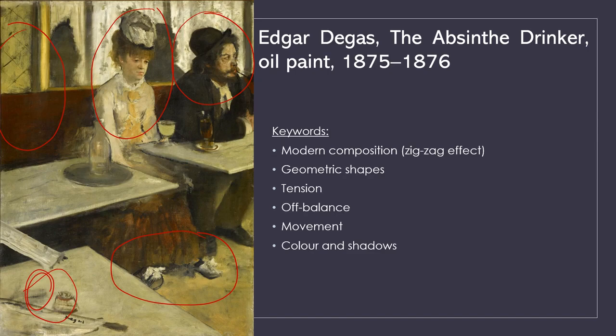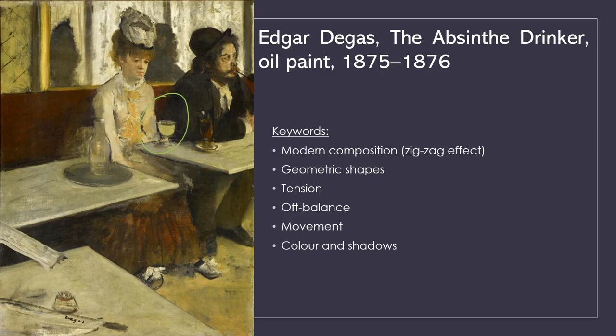We can nearly imagine that we are in the cafe observing these people — and remember, Degas was a painter of humanity, interested in everyday people. What they are drinking is absinthe, as the title suggests. Absinthe was a powerful and toxic liquor available in Paris, and many lower-class people were addicted to it. It created serious problems and was eventually banned, which is the source of the controversy about this painting.